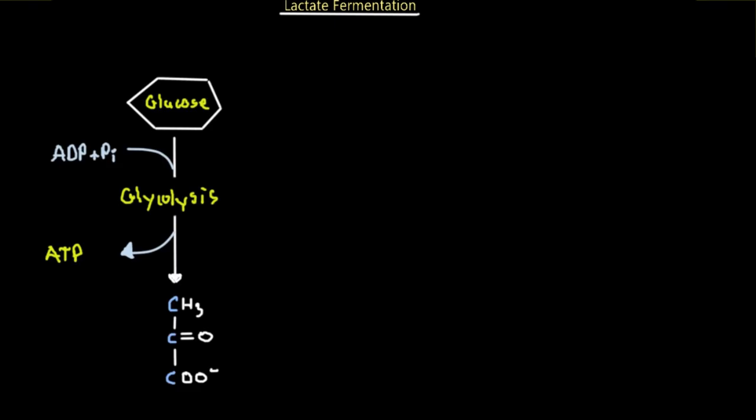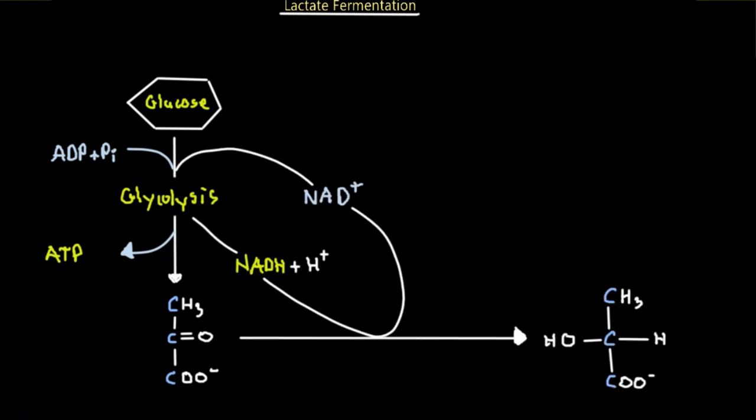So what we've got is first, just the process of glycolysis. We have our six carbon glucose molecule that will then produce two ATP through the process of glycolysis, and two pyruvate molecules.